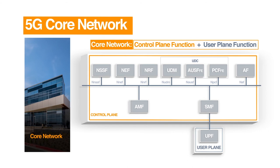Other control functions include NSSF — Network Slice Selection Function — responsible for network slicing. NEF is the Network Exposure Function, providing security for services accessing 5G core nodes. Network Repository Function provides profiles for network function instances and support services. UDC — Unified Data Convergence — is responsible for storing and managing subscriber information. Also included are policy control function and AUSF — Authentication Server Function.